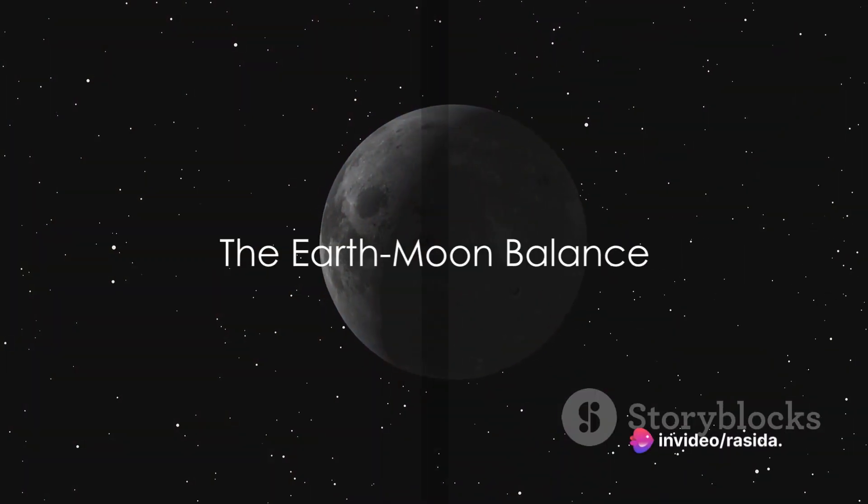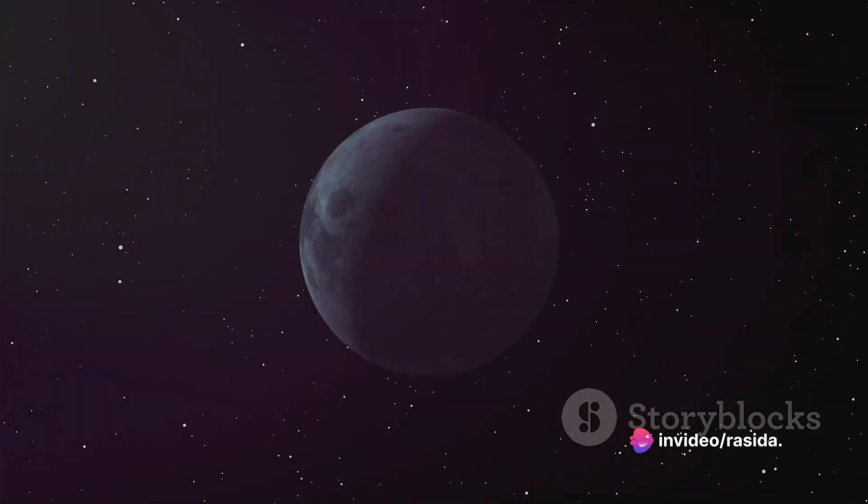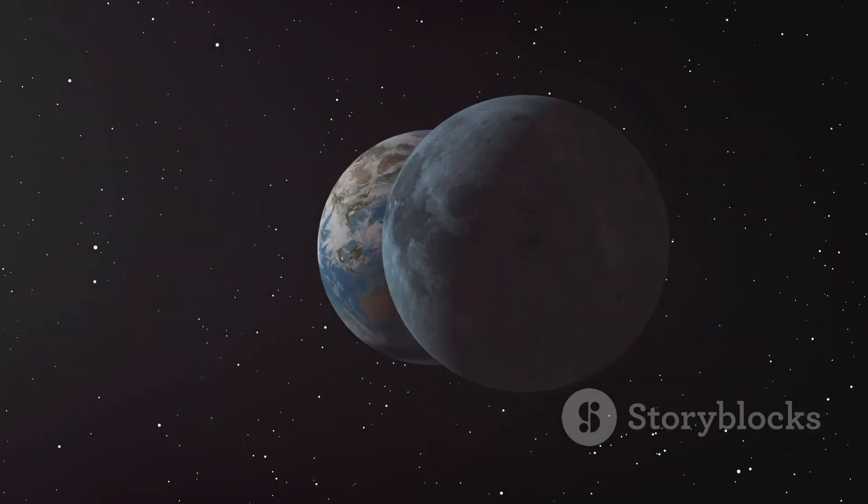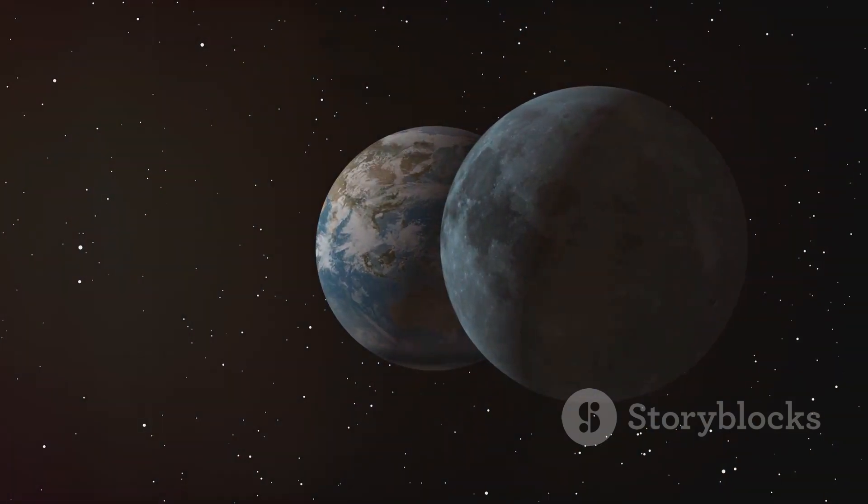The same principle applies to the Earth and the moon. The Earth, being larger and heavier, exerts a strong gravitational pull on the moon. Yet, the moon doesn't crash into the Earth. Why?